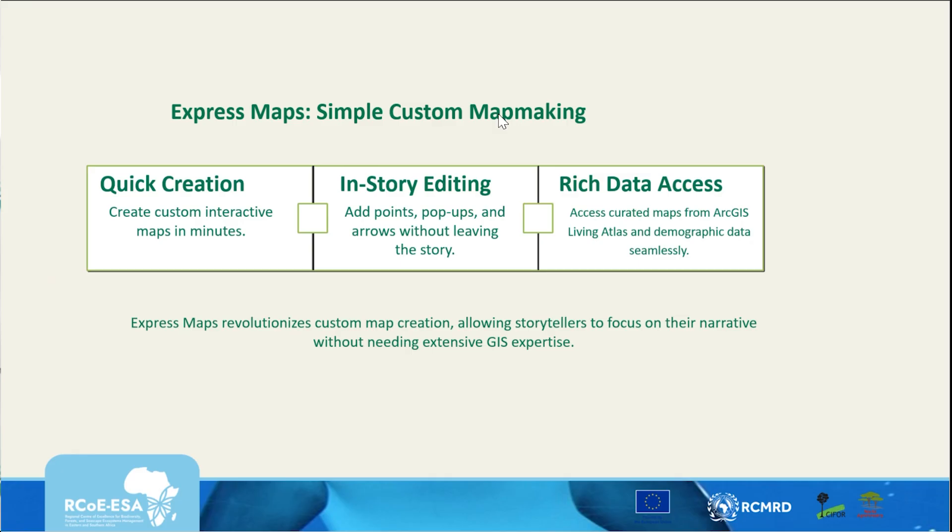An example of map making is express maps, which is simple custom map making. You can do a quick creation and build custom interactive maps in minutes. You are also able to do in-story editing, meaning you can add points, pop-ups, and arrows without leaving the story. You also have rich data access — you can access curated maps from ArcGIS, including from the Living Atlas and demographic data seamlessly. Combining these curated datasets internally or from external sources allows you to communicate your work in a seamless manner.